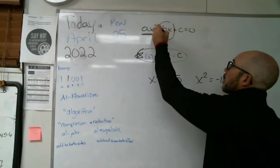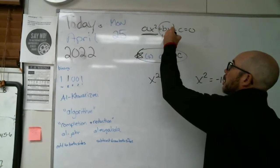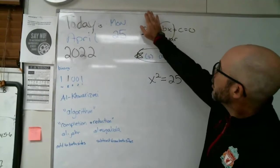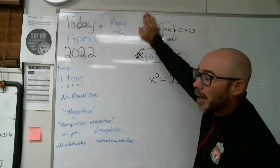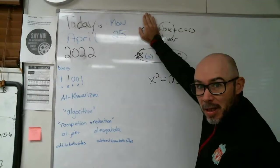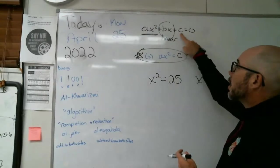This part right here is the linear part. That is, if that was gone, we basically have ourselves the formula, the equation of a line, like mx plus b. Okay. And then this last part is the constant.